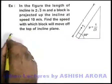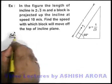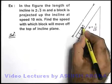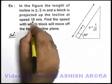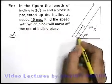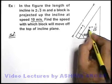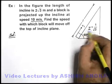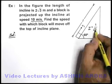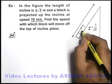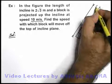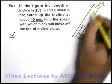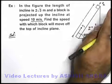Now if we just realize the situation practically, we can see this block is projected up the plane with an initial speed v1, which is given to be 10 meters per second, and we are also given that the friction coefficient between the incline and the block is 1 by root 3, because of which the block will be retarded, and when it will reach the top of the incline, say for example its speed becomes v2, with which it will move off the inclined plane.